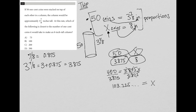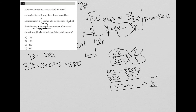This question asks us for the closest — which of the following is closest to the number of one cent coins? We found the exact number is 103 with some numbers after the decimal place. The closest number to that provided by the answer choices would be choice B.